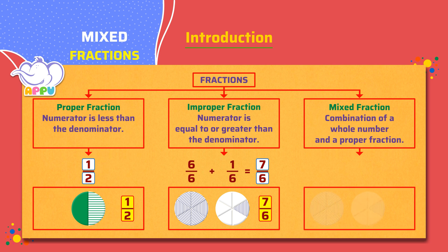The shaded area of the first circle represents 6 by 6 because 6 parts are shaded out of 6 parts. We can write 6 by 6 as 1. And the shaded area of the second circle represents 1 by 6 because 1 part is shaded out of 6 parts.